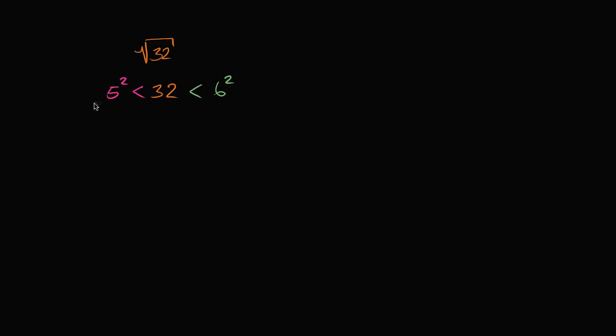So if you were to take the square root of all of these sides right over here, we could say that instead of having all the values squared, if we took the square root, we could say 5 is going to be less than the square root of 32, which is less than 6.